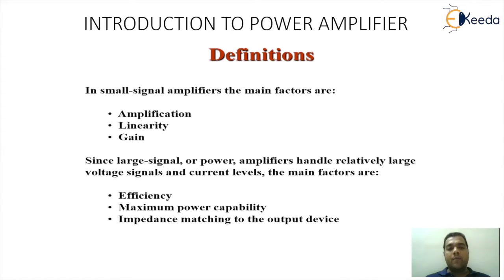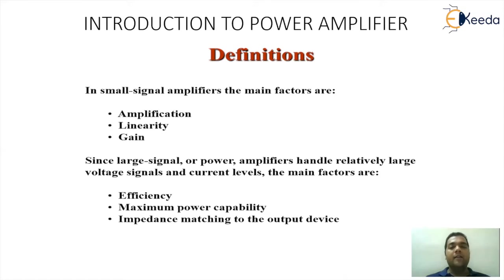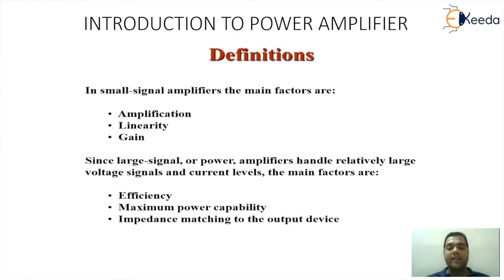Whenever we talk about large signal amplifiers they are basically defined as systems which are going to handle large power. The basic difference between a small signal or voltage amplifier and a large signal power amplifier is that a power amplifier handles high power on the input side as well as on the output side. Whereas voltage amplifiers have an input signal in the range of millivolts and an output signal of a few volts.